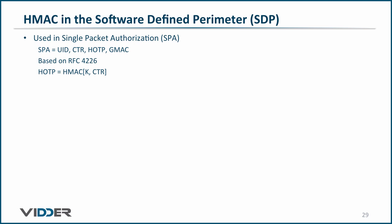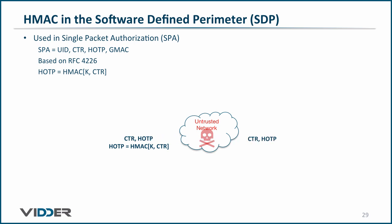Here we have our untrusted network. The client increments the counter and computes the hashed one-time password, where the hashed one-time password is the HMAC of the secret key and the counter. The counter and the HOTP are sent across the network. On the other side, the controller independently computes the HOTP and checks to make sure they are equal. If so, then this is a legitimate client. There you have it — keyed hash message authentication code, better known as HMAC, and how it is used in the software-defined perimeter.